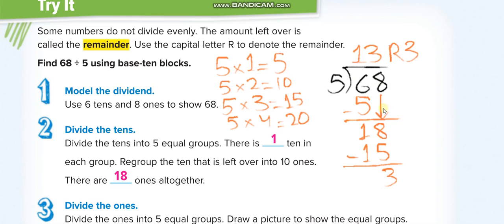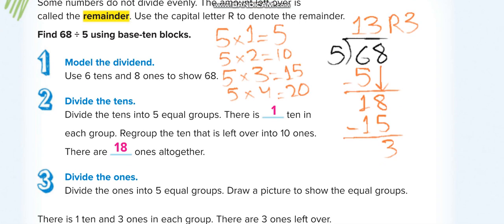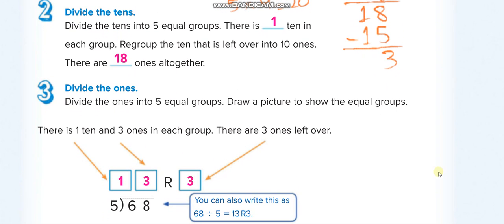Now we bring the 8 down with the 1 — it becomes 18. We think: 5 times what equals 18 or less and closer? 5 times 3 is 15 and 5 times 4 is 20, which is more than 18. So we take 5 times 3 equals 15. We write 3 up here. 18 minus 15 equals 3, so the remainder is 3 and the quotient is 13 remainder 3.